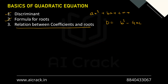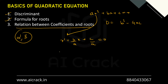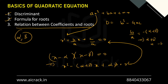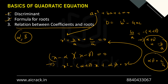The relation between coefficients and roots: rewriting the equation as x² + (b/a)x + (c/a) = 0 by dividing through by a. Since α and β are roots, the equation can also be written as (x − α)(x − β) = 0, which expands to x² − (α + β)x + αβ = 0. Comparing, we get sum of roots α + β = −b/a and product of roots αβ = c/a.